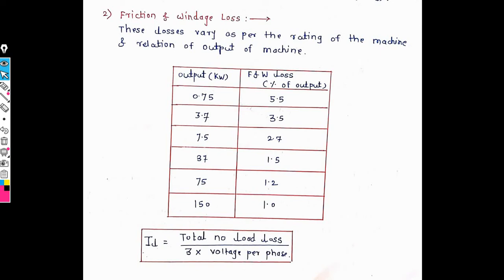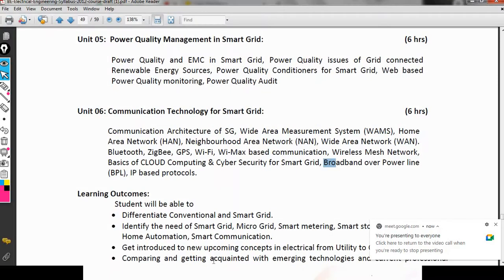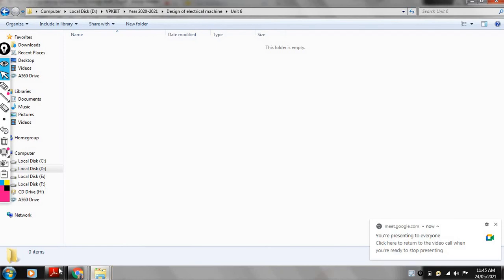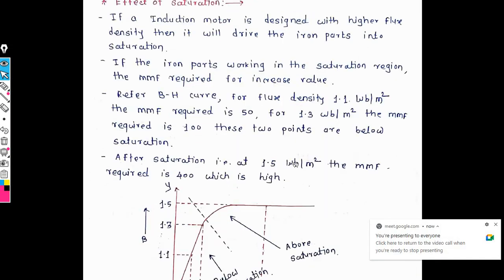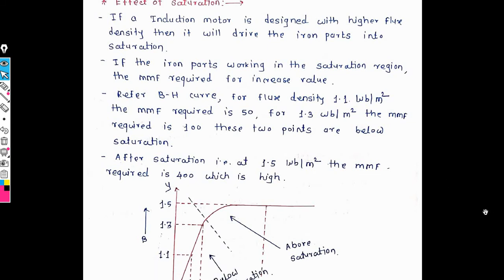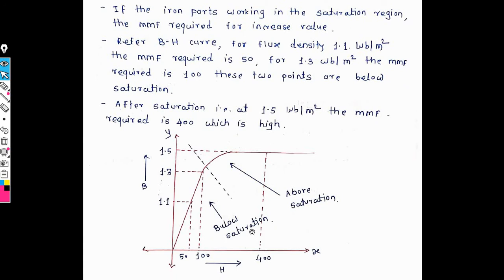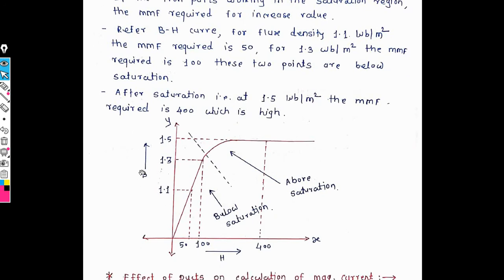This is the overview of the magnetizing current and core loss component. Also in performance parameters of the three-phase induction motor, saturation point is very important. Saturation point means maximum limit of flux density. The effect of saturation region depends on MMF — magnetomotive force — which is calculated with the help of stator and rotor. The diagram of the BH curve is shown, where B indicates maximum flux density and H means magnetic field strength.